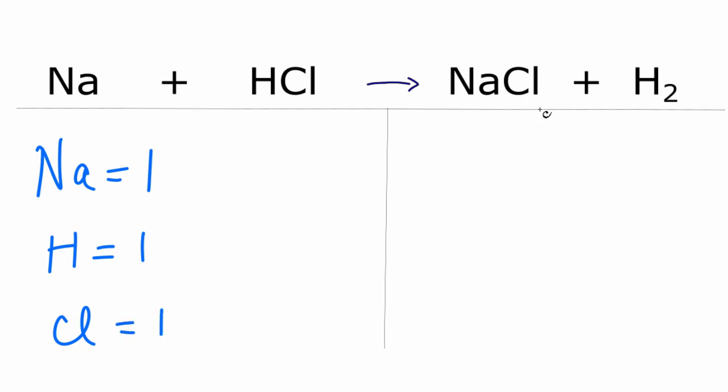On the product side, we have Na, and we have one of those, and then the hydrogens, we have the two, and the chlorine, we have the one. So everything is balanced except the hydrogens.